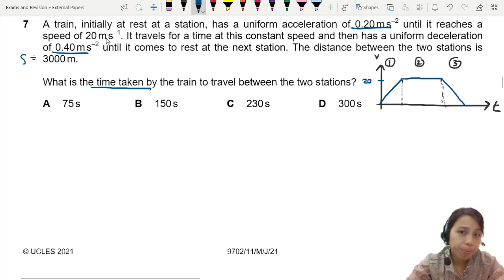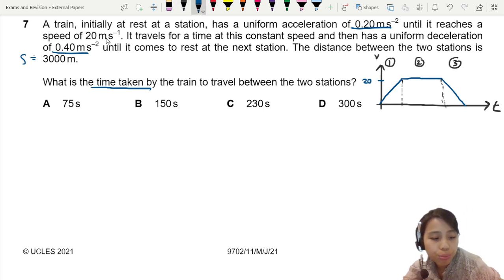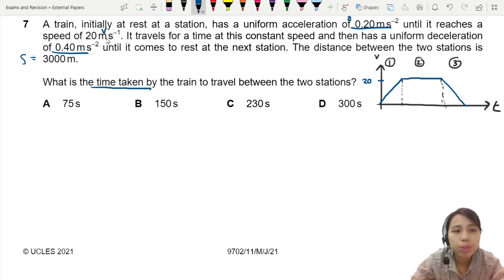Section 1, we have enough information to find a lot of things. We know the acceleration, we know final speed and we know initial speed at rest. V, U, A. We can find S, we can find T. Let's find T first. So for section 1, we can use V equals to U plus AT.